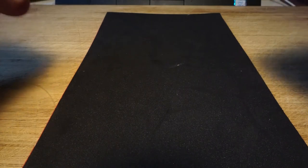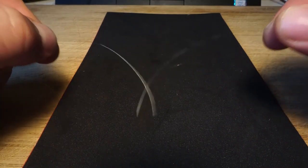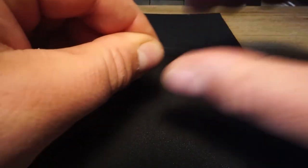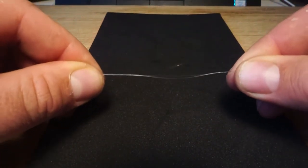To do this knot we're going to take the tag ends of the two pieces of line that I want to connect and I'm going to overlap them by about four inches or so, so they're running parallel with each other.